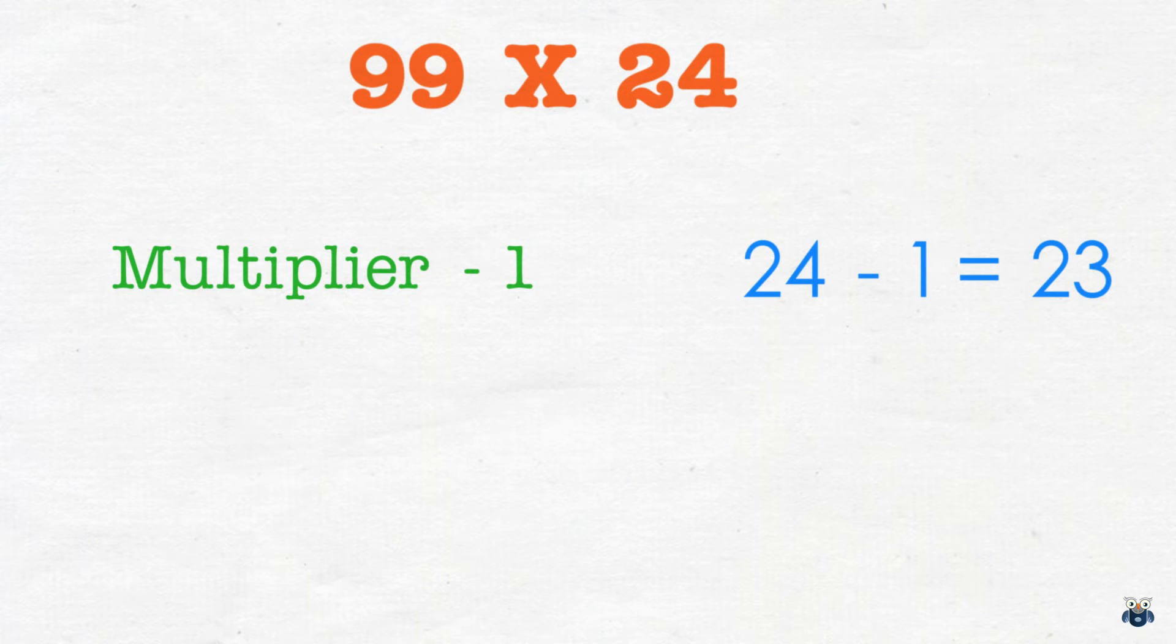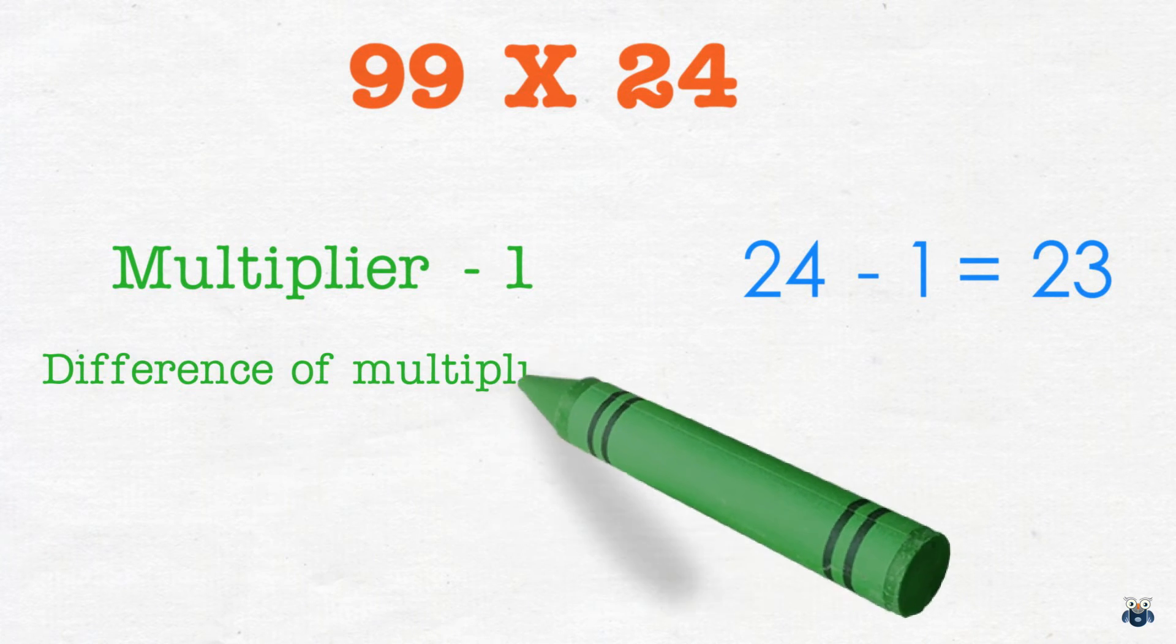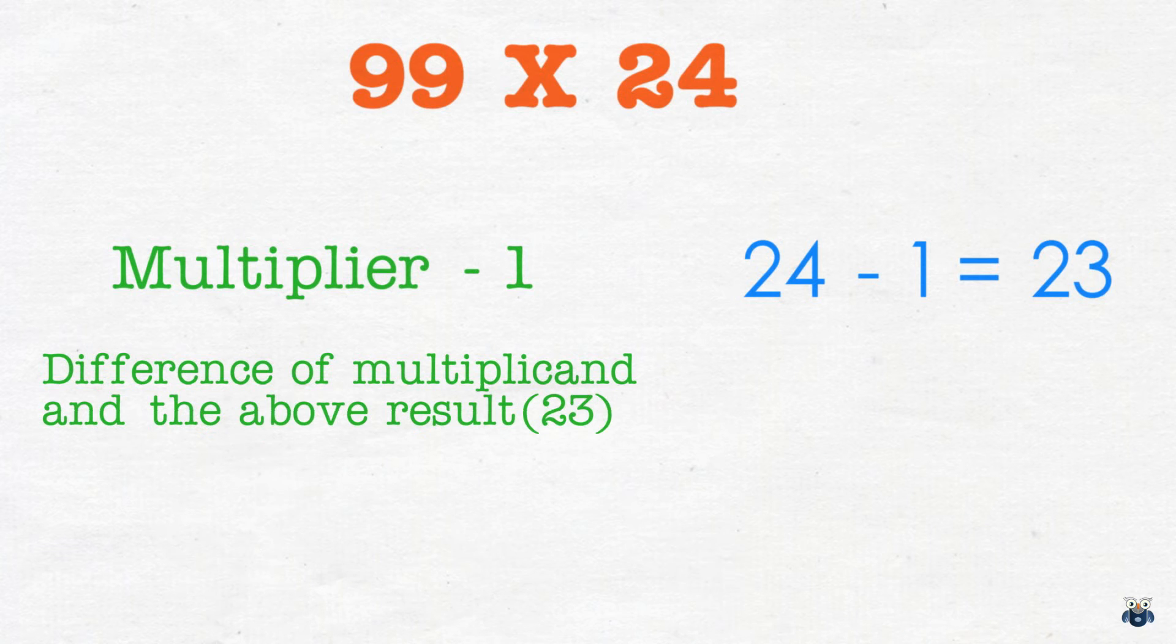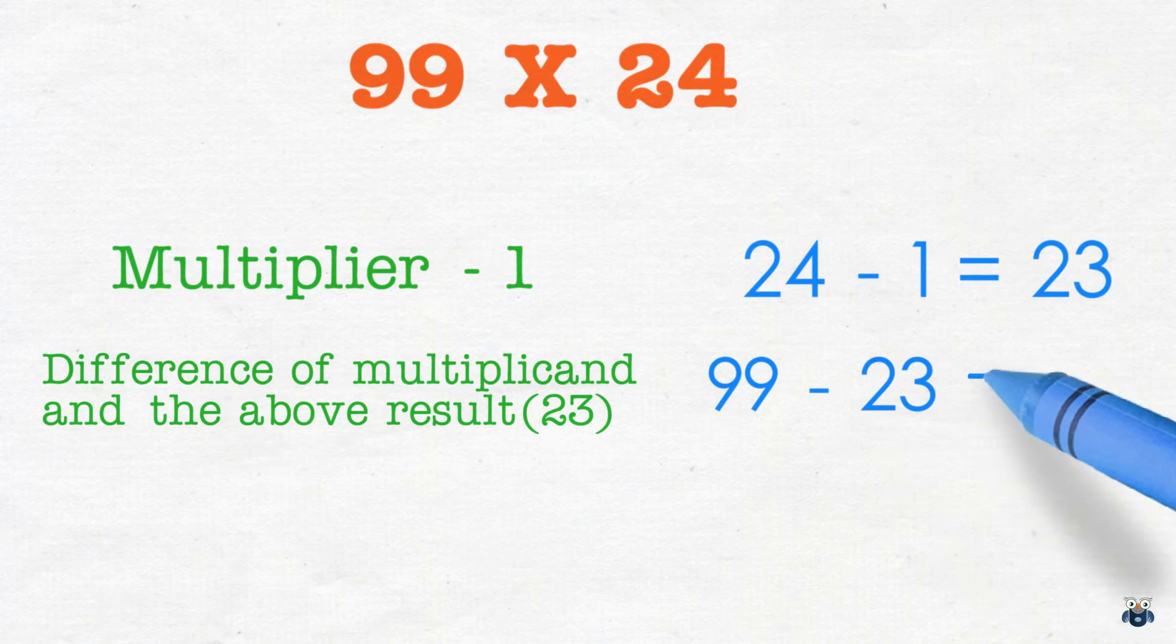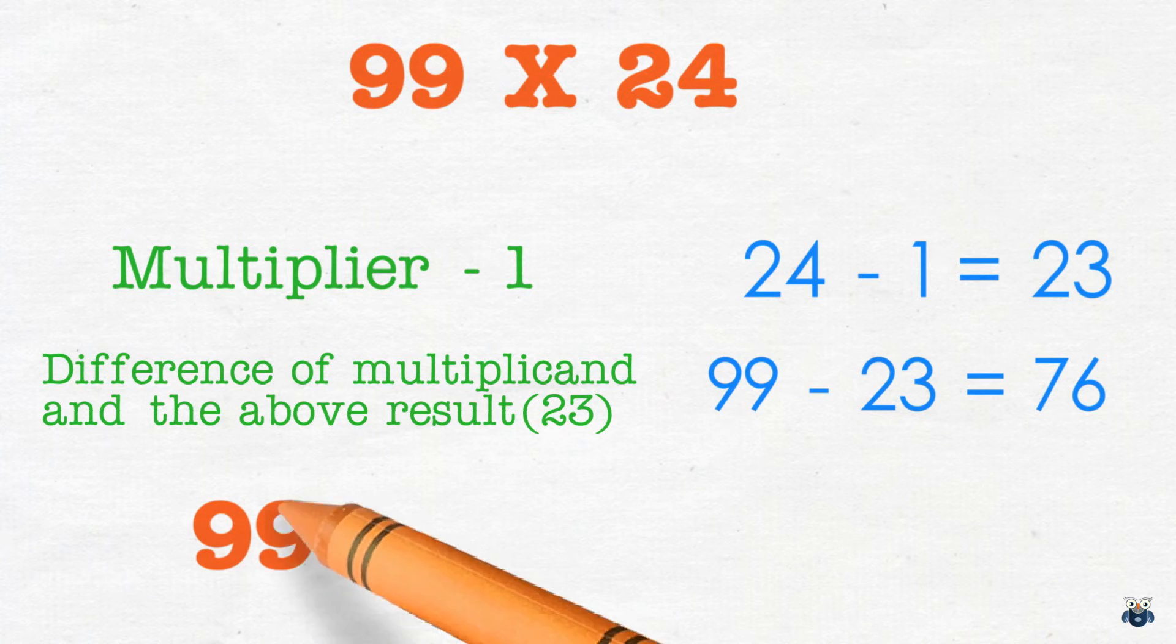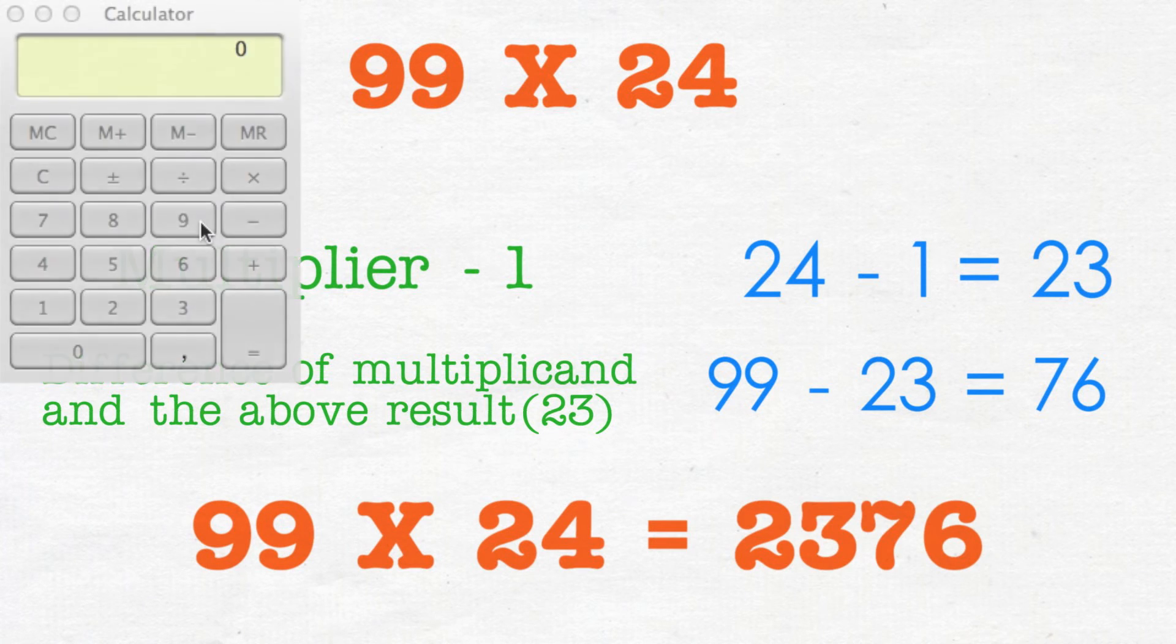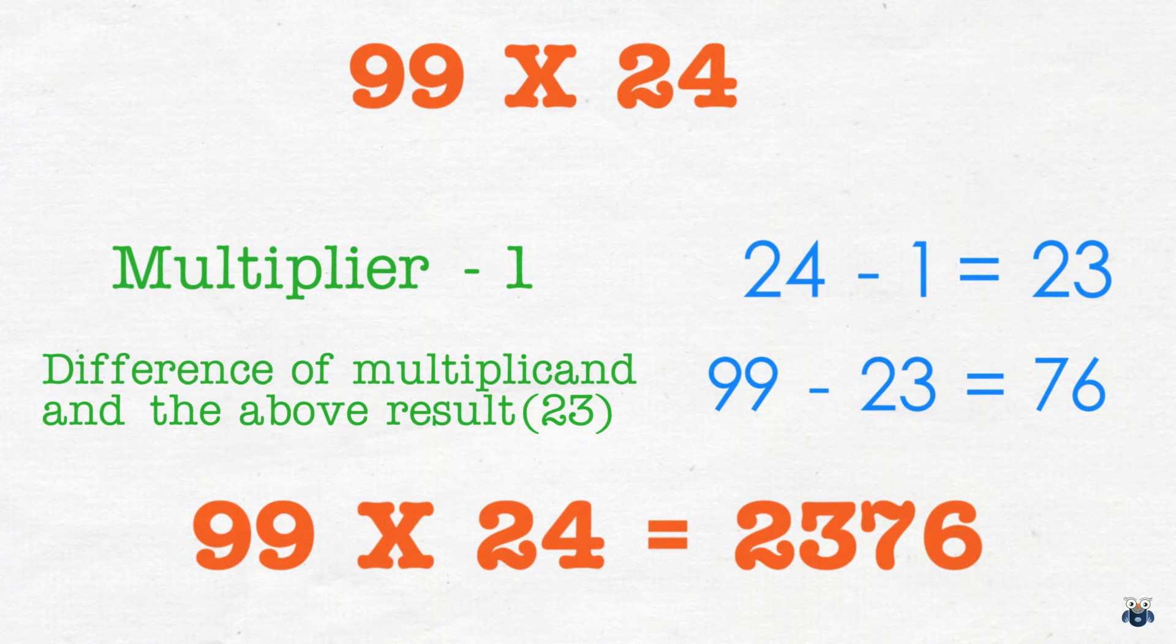The second part is the difference of the multiplicand and the above result. So we subtract 23 from 99. That gives us 76. And putting these two results together the answer is 2376. Let's pull up a calculator and validate our result. This is the correct answer.